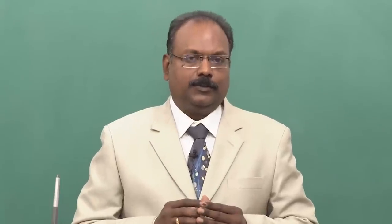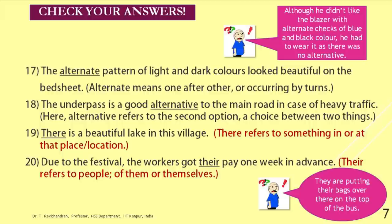17 and 18: the correct choice for 17 is: 'The alternate pattern of light and dark colours looked beautiful on the bed sheet.' Alternate means one after the other, occurring by turns — if I come on alternate days, I come one day and skip the next. Whereas 'alternative' refers to a choice between two or sometimes more things where you select the second option: 'The underpass is a good alternative to the main road in case of heavy traffic.'